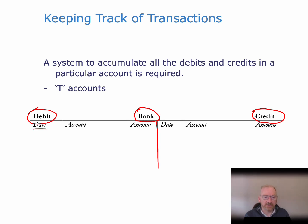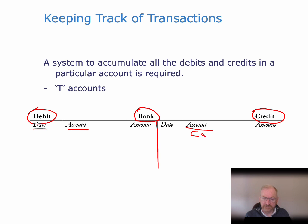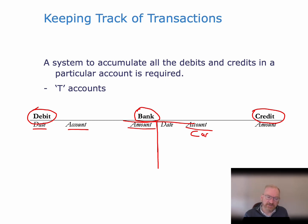When we make an entry, we put the date and the corresponding account — that is, the account that the entry came from. So in our car example, it was debit car, credit bank. Over here we would have car as the corresponding account for that transaction. That's the basis of T-accounts — the reason they're called T-accounts is that they look like a T. In many computer systems you have exactly the same thing, except it doesn't look like a T. You have all the details and then debit and credit columns — that's the kind of printout you get, but it's exactly the same concept.